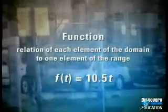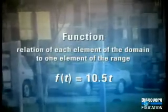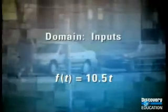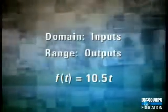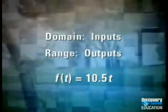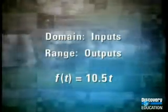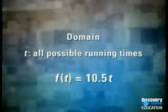A function is a relation that maps each element of the domain onto one element of the range. The elements of the domain are all the allowable inputs of the function, and the range is a collection of all the outputs that would come from the entire set of possible inputs. In this calorie function, the domain is the entire set of possible running times.